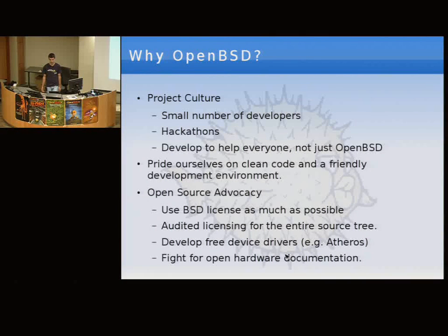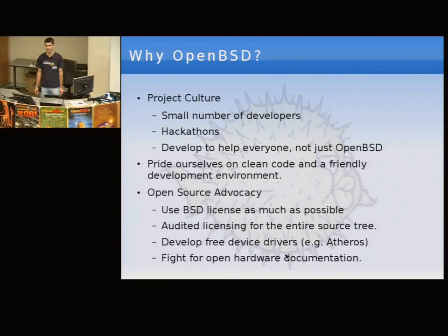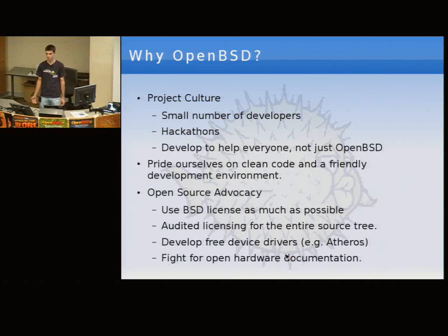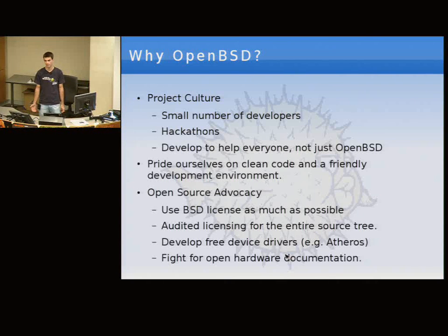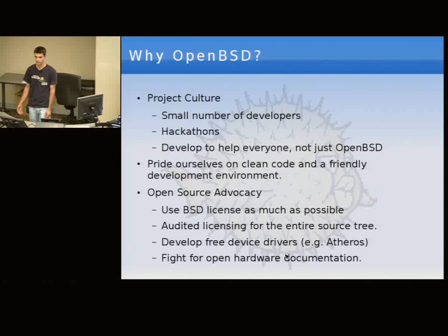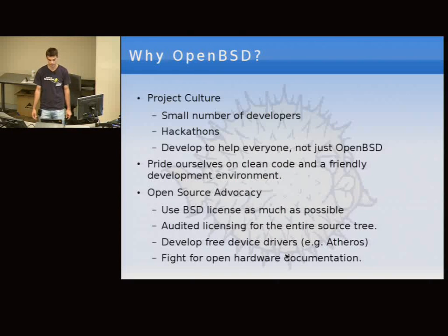We've made a lot of noise in the past few years with open source advocacy. We strongly believe in using the BSD license as much as possible. We went through the whole source tree and audited every single file to make sure the license is what we want. In the process, we found files without licenses or with mistakes. We contacted authors and fixed most of them, and rewrote the files we couldn't fix. We still have some GPL code in the compiler that we can't get rid of yet, but we want to.